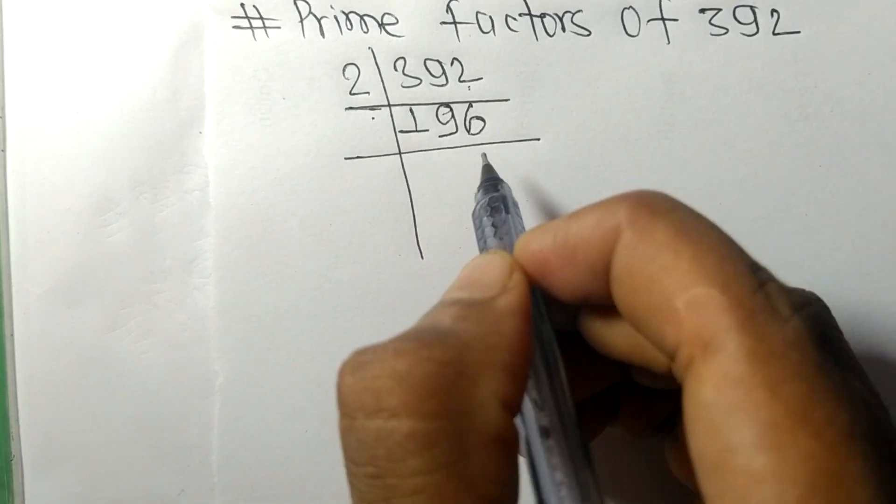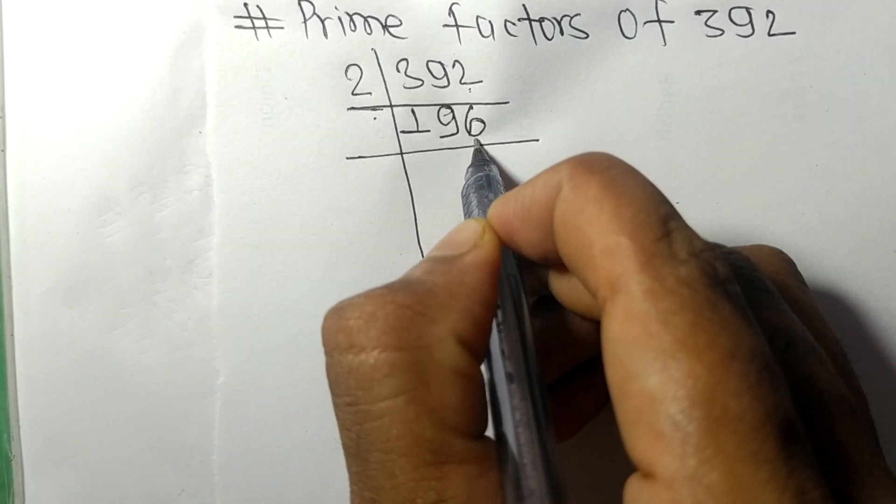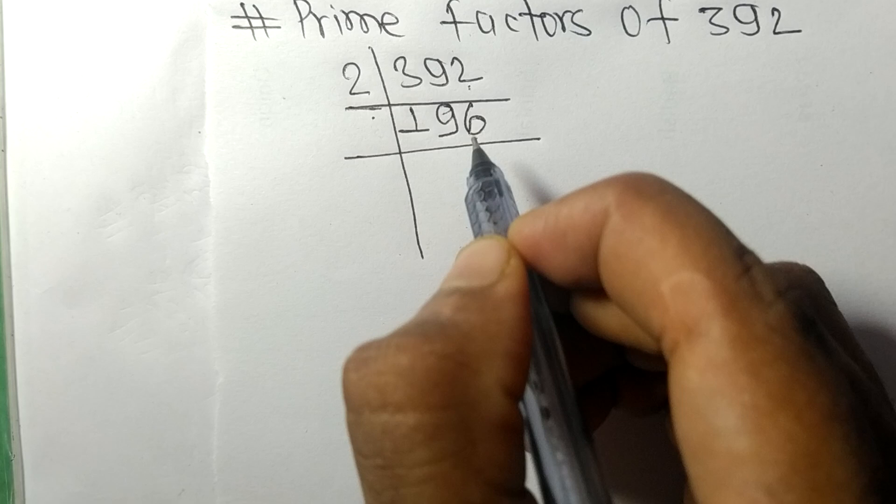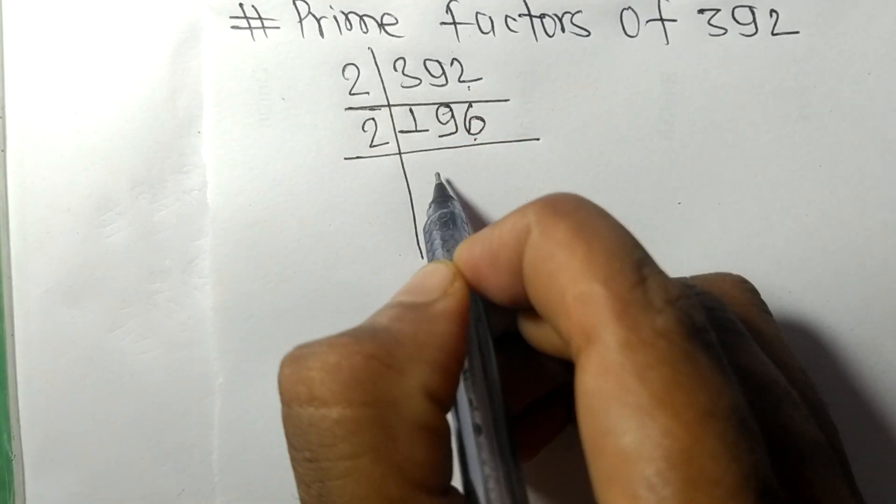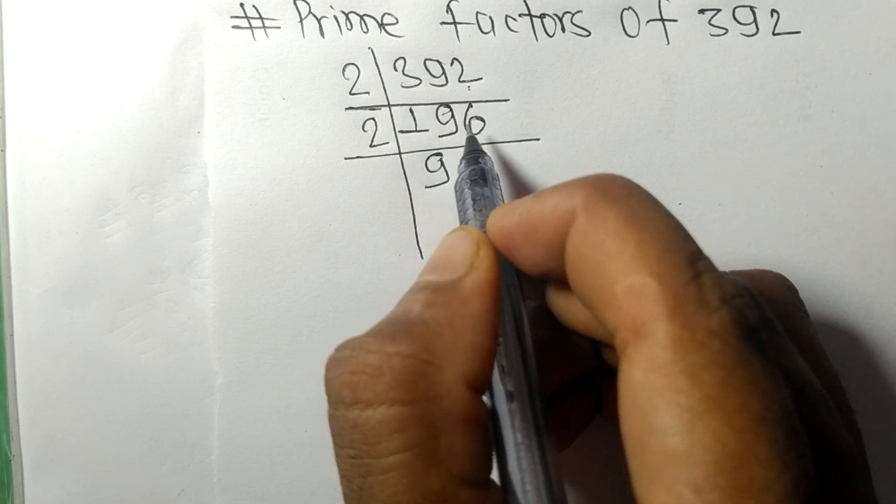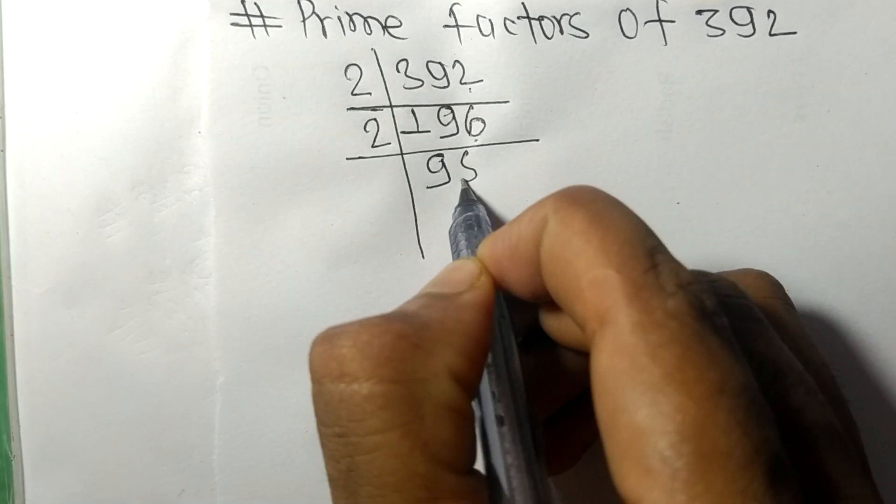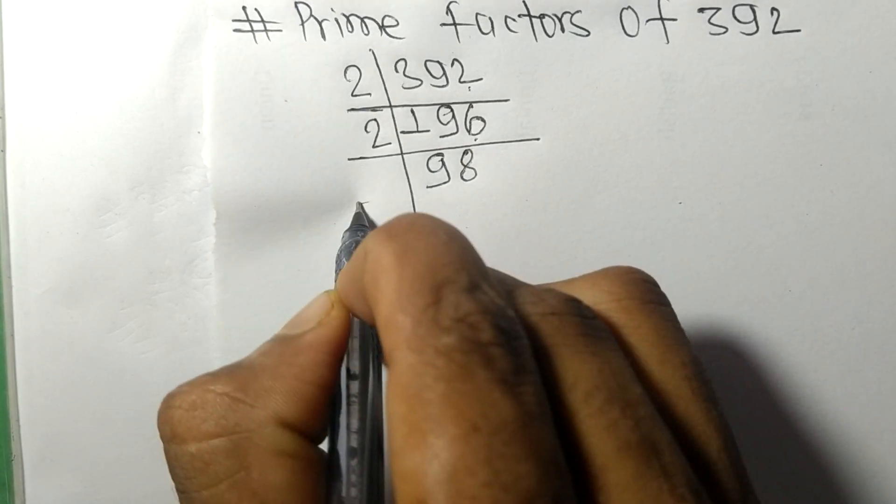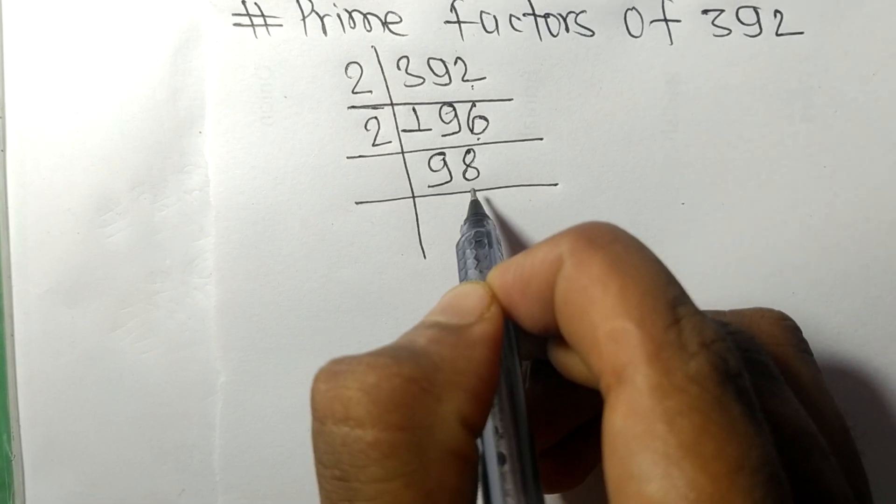Now we have 196, which has an even number at the end, so it is divisible by 2. Two times nine equals eighteen, remainder one. One six is sixteen. Two times eight equals sixteen. Again we have an even number, 98.